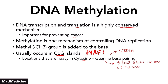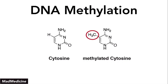Methylation on CpG islands can actually occur on both strands — not just one strand, but both strands. On the left you have a normal cytosine molecule — this is the normal structure. On the right, you have the methylated cytosine molecule. As you can see, this carbon that had a hydrogen atom attached to it now has a methyl group attached to it, which makes the structure of the CG bond actually stronger.